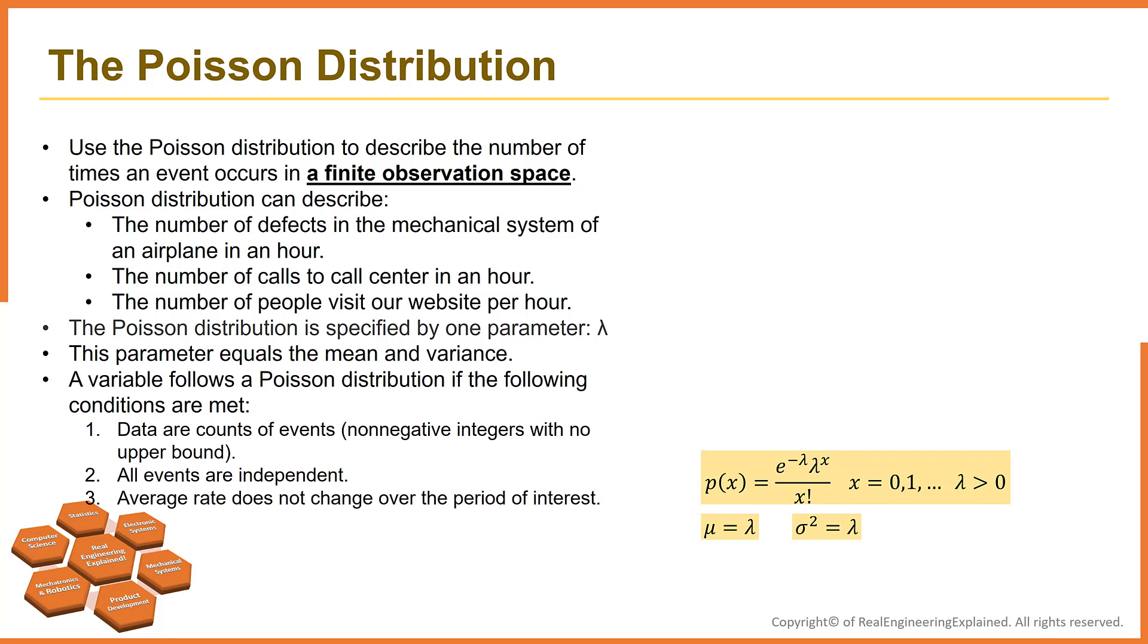A variable follows a Poisson distribution if the following conditions are met. Data are counts of events, non-negative integers with no upper bound.